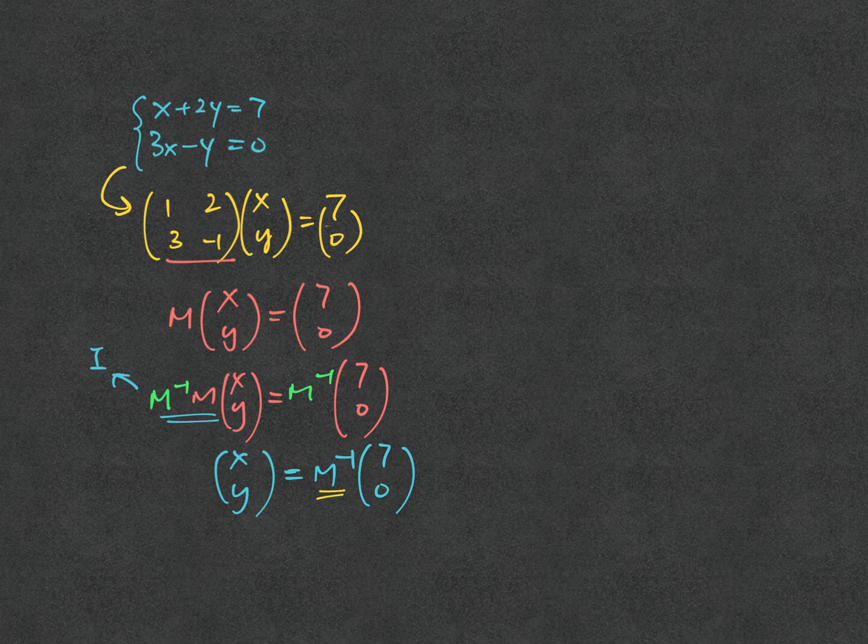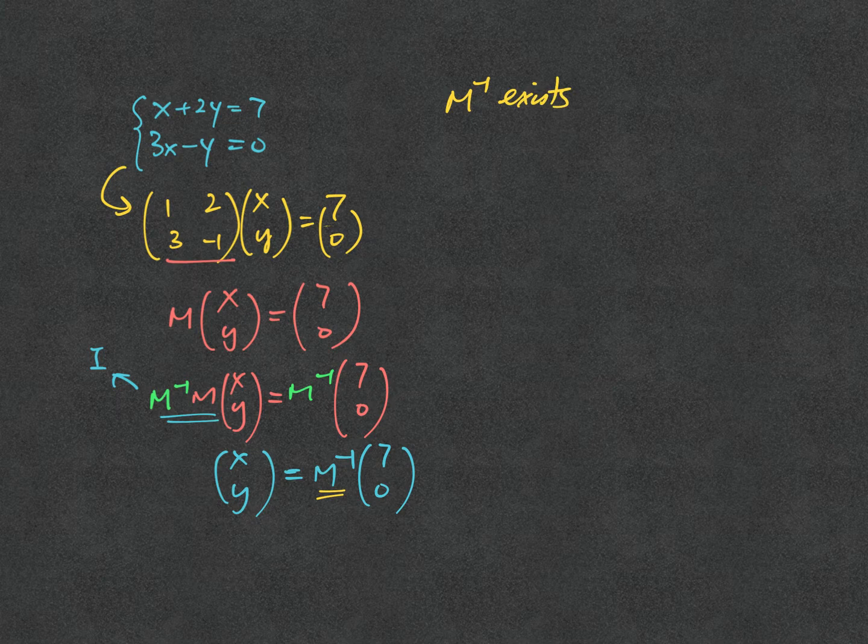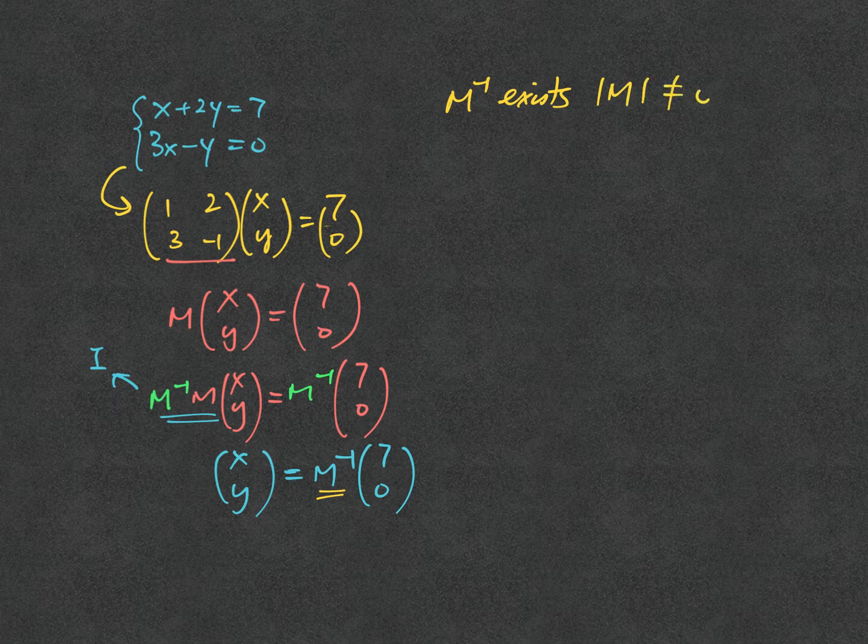So let's recall the condition of having M inverse. M inverse exists in certain conditions, which is, do you remember it? Yes, that's good. So it should be determinant not equal to 0.